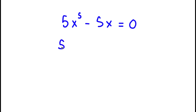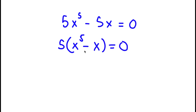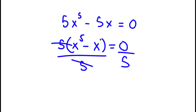So now I have 5 times x to the power of 5 minus x is equal to 0. I can go ahead and divide both sides by 5. These two cancel out, and now I'm left with x to the power of 5 minus x is equal to 0.